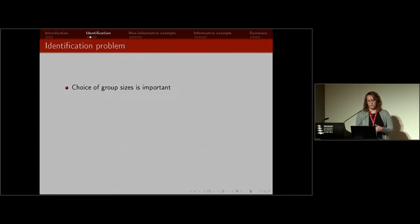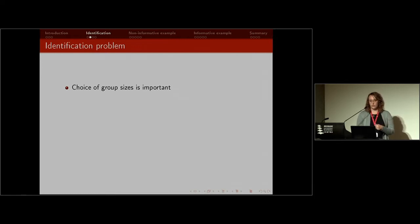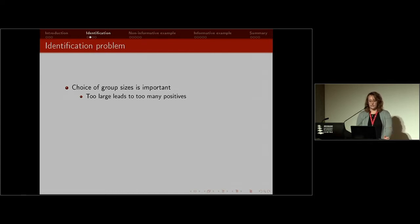With this identification problem, the choice of group sizes is incredibly important. Maybe you start with 50 people — is it 10 groups of five, five groups of 10, or some other split? If group sizes are too large, that can lead to too many positives, and then it's just inefficient — you're going to have to test more people to confirm who has the disease. If the groups are too small, it leads to too many tests because you're really not gaining any benefit over individual testing.